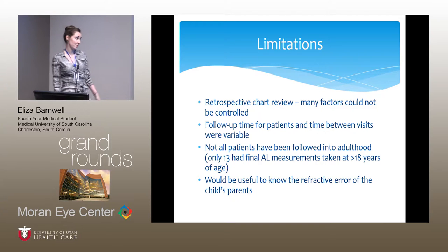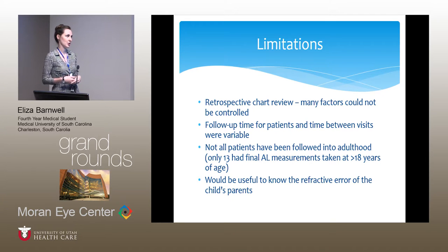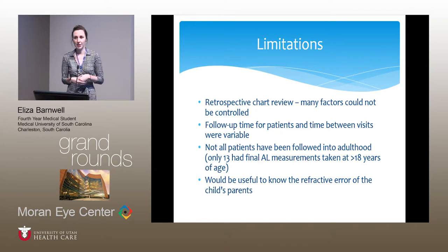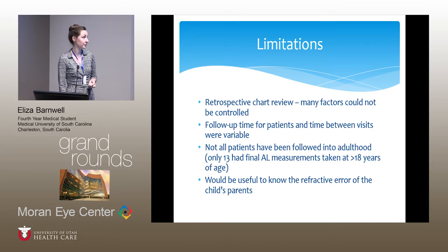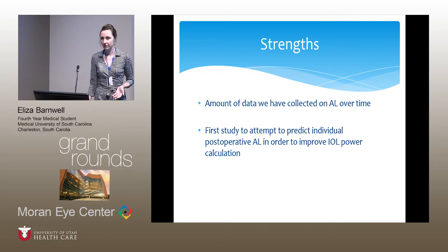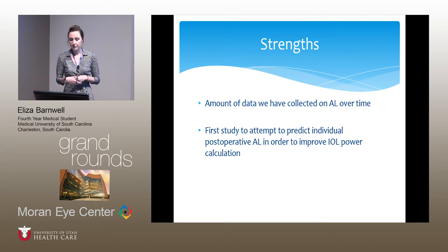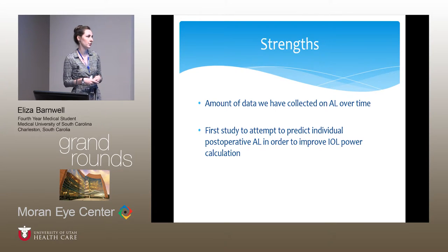Some limitations: this was a retrospective chart review, so many factors couldn't be controlled. Follow-up time and time between visits were variable. Not all patients were followed into adulthood — only 13 had final measurements taken after age 18. It would also be useful to know parental refractive error, since there's a genetic component to myopia and axial length. Strengths include the substantial axial length data collected over time at MUSC, and notably this is the first study to attempt to predict individual post-operative axial length in order to improve IOL power calculations.